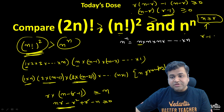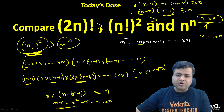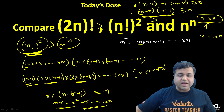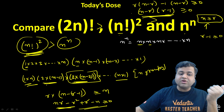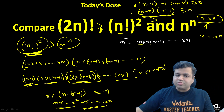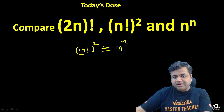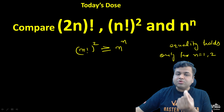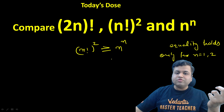Also r−1 ≥ 0 since r starts from 1. Therefore (n−r)(r−1) ≥ 0 is always satisfied, which means each group r(n−r+1) ≥ n. So the product of all n groups is greater than or equal to n^n, meaning (n!)² ≥ n^n. Equality holds only for n=1 and n=2 because for n ≥ 3 at least one factor makes the inequality strict.